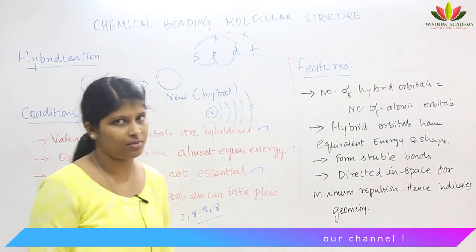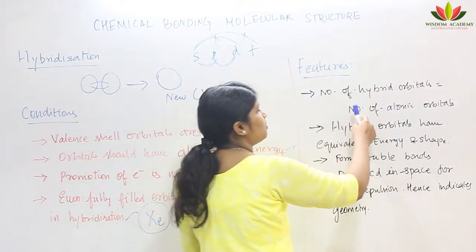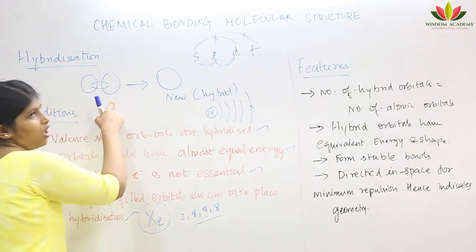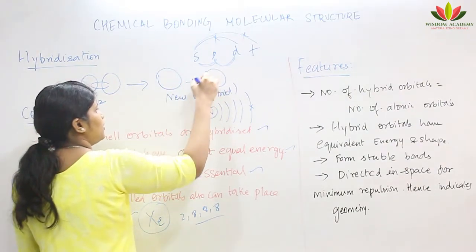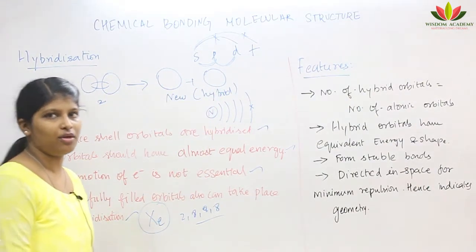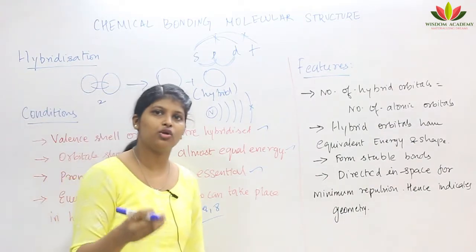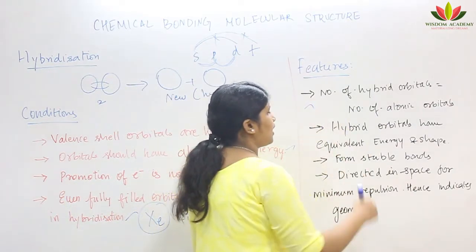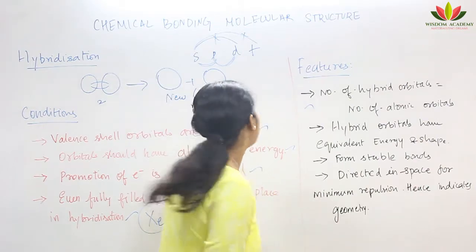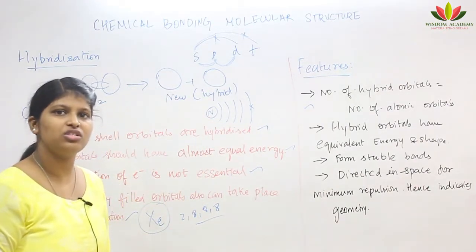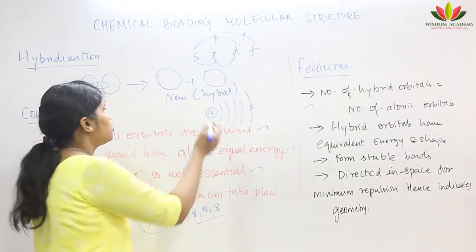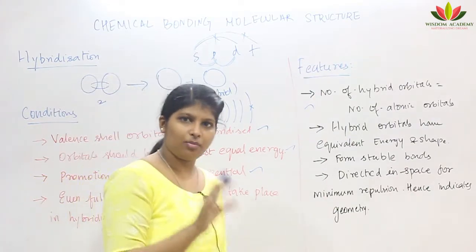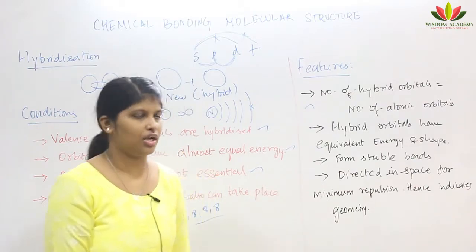Now we will see the special features of hybridization. First: the number of hybrid orbitals will be equal to the number of atomic orbitals. For example, if two atomic orbitals participate, we will get two hybrid orbitals. Second: hybrid orbitals have equal energy and shape — the two hybrid orbitals formed will have equal energy and equal shape.